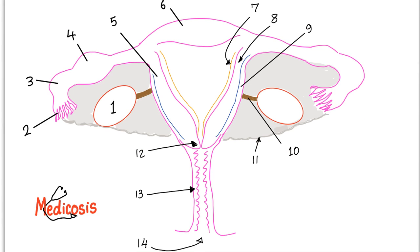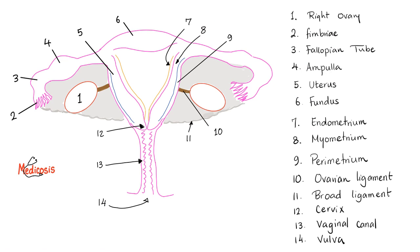Female reproductive system, let's go. So, please, get a blank piece of paper and a pen and write these down. And now, pause. And here are the answers.